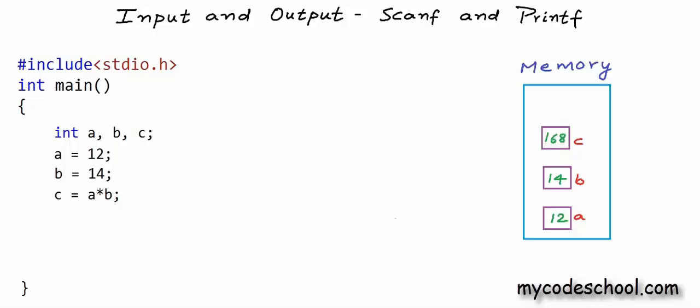Now we can print the value in c using printf. The printf function, if you remember from the previous lesson, is used to print a formatted string. The first argument to printf should be a string constant — a sequence of characters within double quotes. The string constant we have passed here has two characters: percent and d. What printf basically does is print the string constant, but before printing it applies a set of rules and does some formatting. When printf sees a %d in the string constant, it expects another argument of type integer corresponding to that %d, and it replaces %d with the value of that integer.